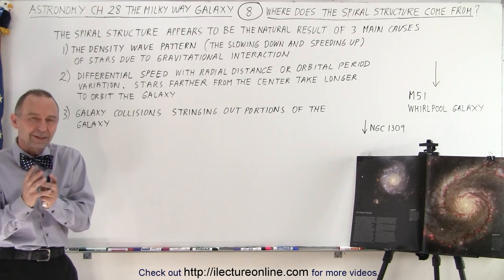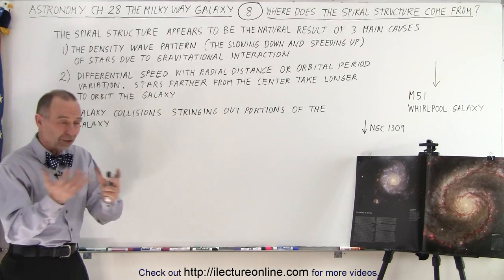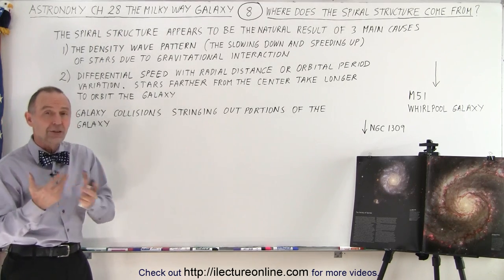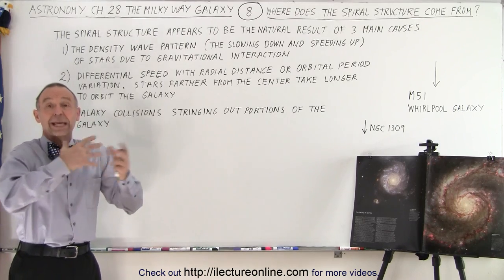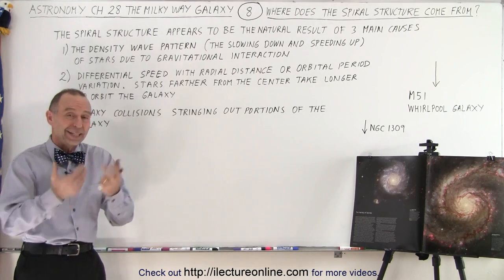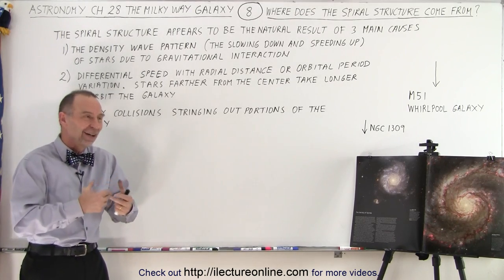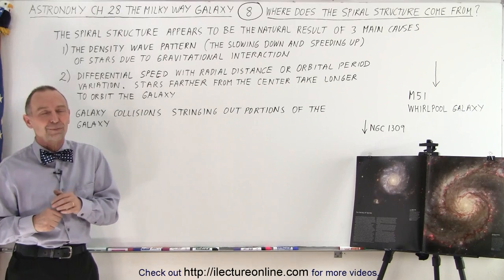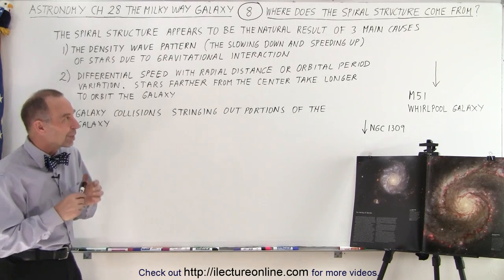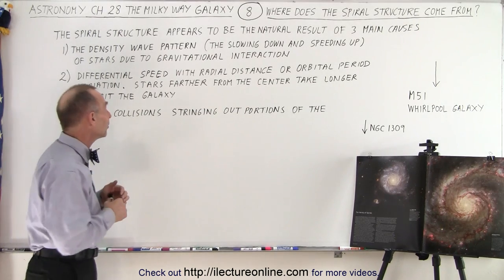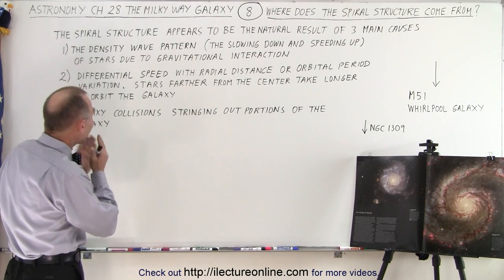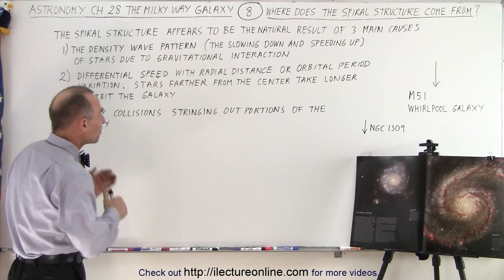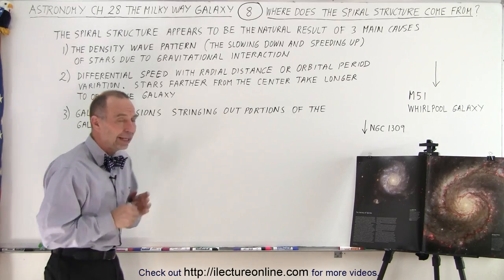But what is it? Because just because things are rotating doesn't mean a galaxy will develop a spiral structure. So what are those three conditions? Well, the first one is what we call the density wave pattern.